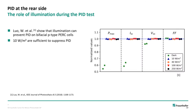An interesting and important point is that illumination during the PID test plays an important role. Luo has shown that simultaneous illumination during the PID test for irradiance levels as low as 10 W per square meter is sufficient to completely suppress PID. This is shown in the diagram for industrially produced PERC modules: while in the dark a severe degradation in power is observed — mainly due to ISC and VOC losses while the fill factor is not affected — switching on a light source during the high voltage stress completely prevents the degradation.